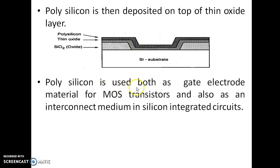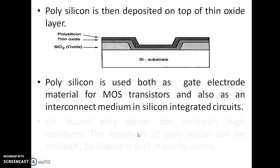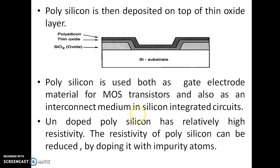Polysilicon is used both as a gate electrode material for MOS transistors and also as an interconnect medium in silicon integrated circuits. Undoped polysilicon has relatively high resistivity; the resistivity can be reduced by doping it with impurity atoms — either trivalent or pentavalent impurities.